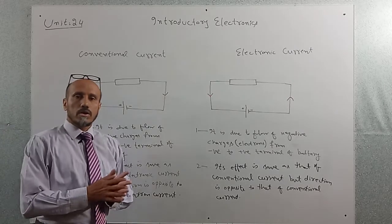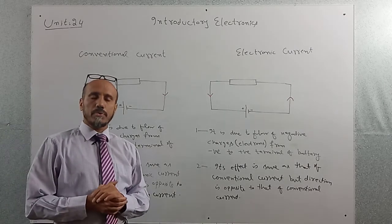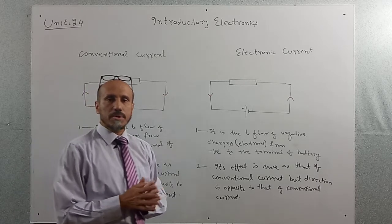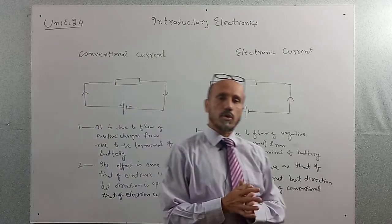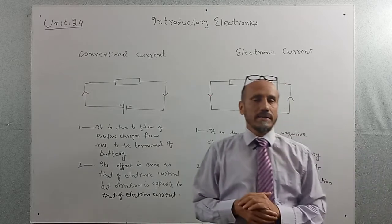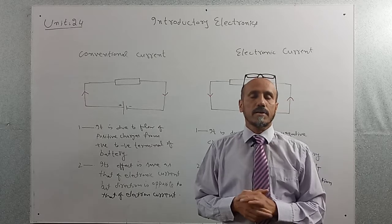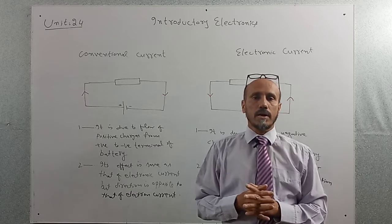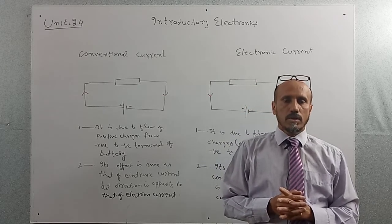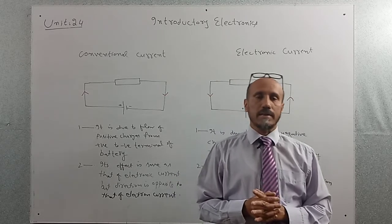Assalamu alaikum. Today we will discuss another topic of unit number 24 of introductory electronics — that is the difference between conventional current and electron or electronic current. Initially, when scientists researched the flow of current, they assumed that current flows due to the flow of positive charges, and they made that conclusion.